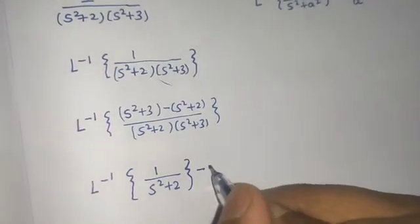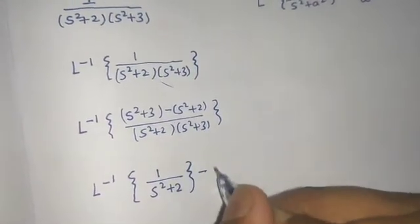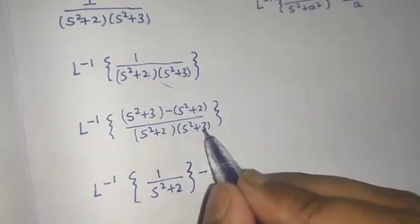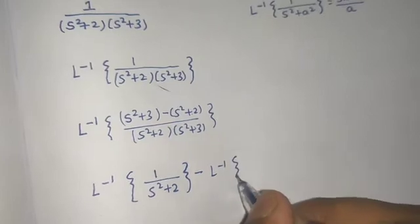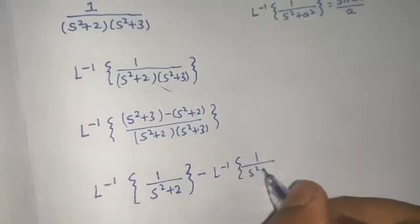And we can take the minus sign outside. Dividing by the denominator, you'll be left with Laplace inverse of 1 over (s²+3).